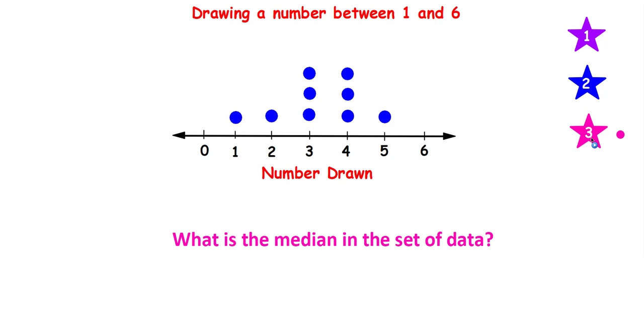What is the median in the set of data? Do it on your own. To find the median, the first thing I'm going to do is pull the values off of this dot plot or line plot. And there they are. The median is the number that's in the middle. So I'm going to work my way in. The median of that set of data is 3.